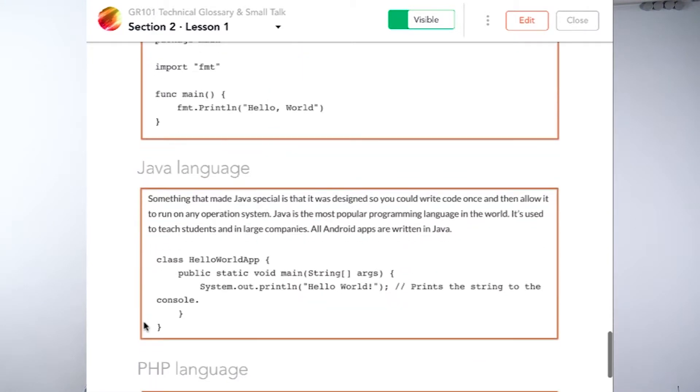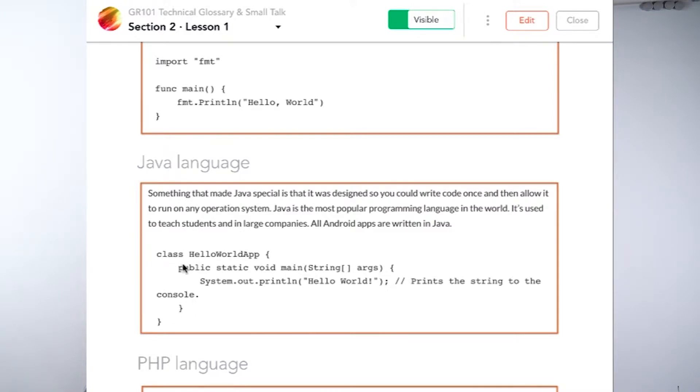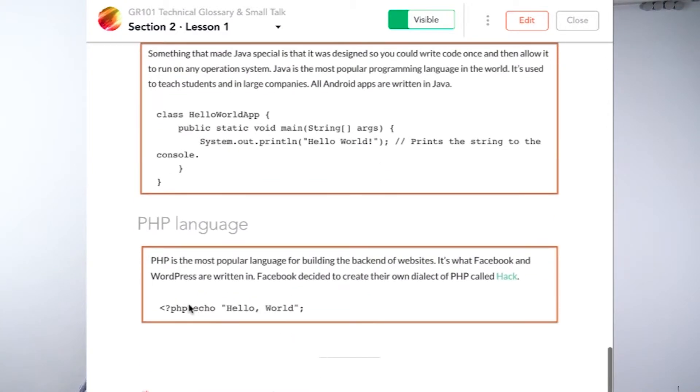Go language relatively simple. Java language is a little more complicated because you need to create a class with the name Hello World app and then a function inside the class, public static void main function, which will output into system.out.println. So println stands for print line hello world. PHP language, you can see, is the most popular language for building the backend of websites. And you can see here how easy it is to write Hello World. You just echo hello world and that's it.